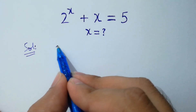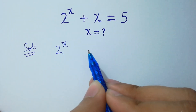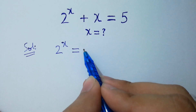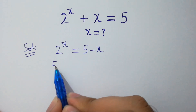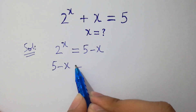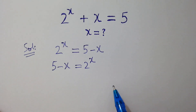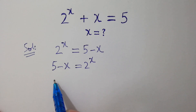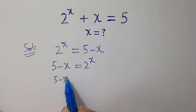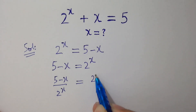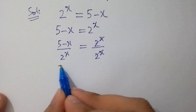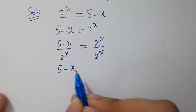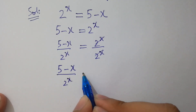2 to the power x will be equal to 5 minus x, and 5 minus x will be equal to 2 to the power x — both are absolutely the same. Dividing both sides by 2 to the power x, the 2 to the power x terms cancel, and we get: 5 minus x over 2 to the power x equals 1.